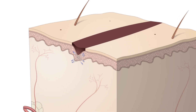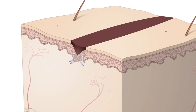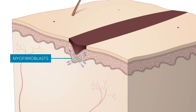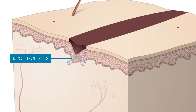During wound contraction, myofibroblasts decrease the size of the wound by gripping the wound edges and contracting, using a mechanism that resembles that of smooth muscle cells. When the cells' roles are close to completion, unneeded cells undergo apoptosis.